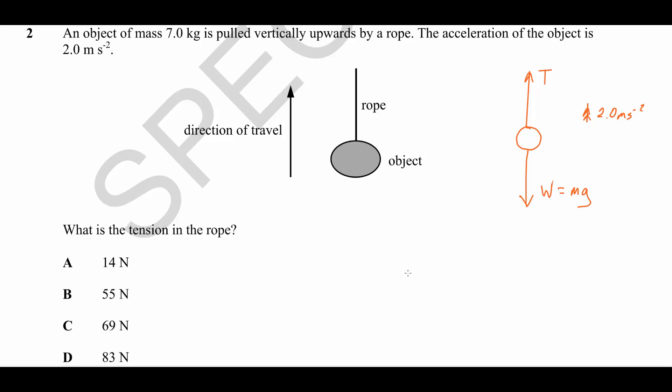So, first of all, we know that T is not equal to W. We know that because it is accelerating upwards. What we know is that there is a net force upwards, which we'll call F. And that net force is equal to the difference between the tension upwards and the weight downwards.